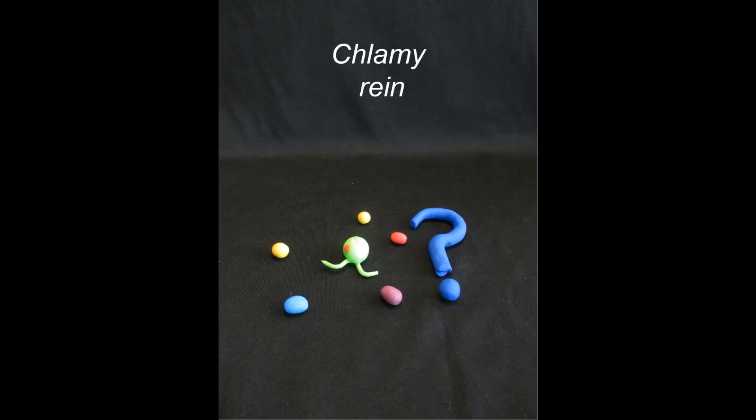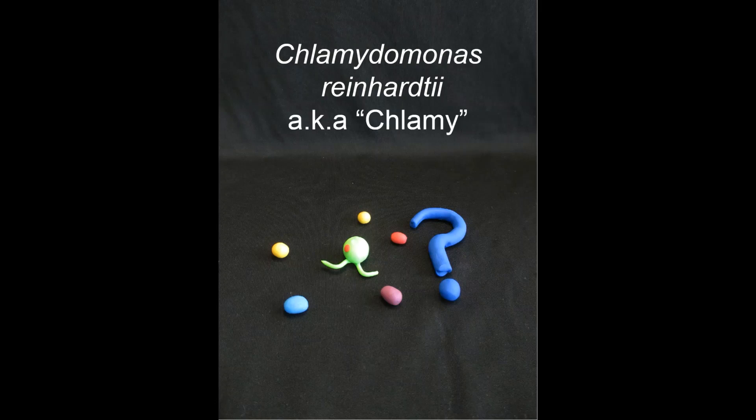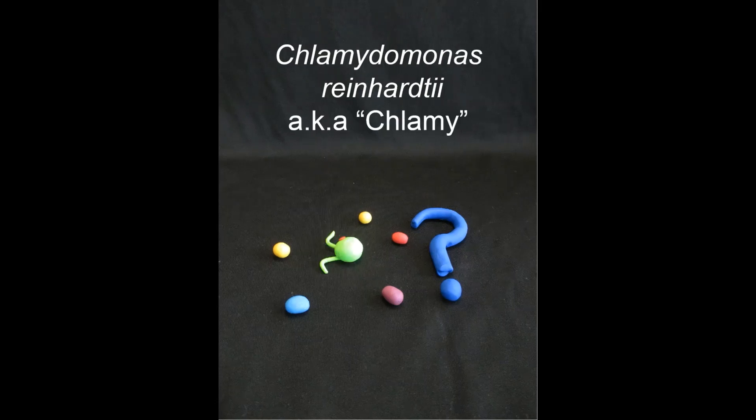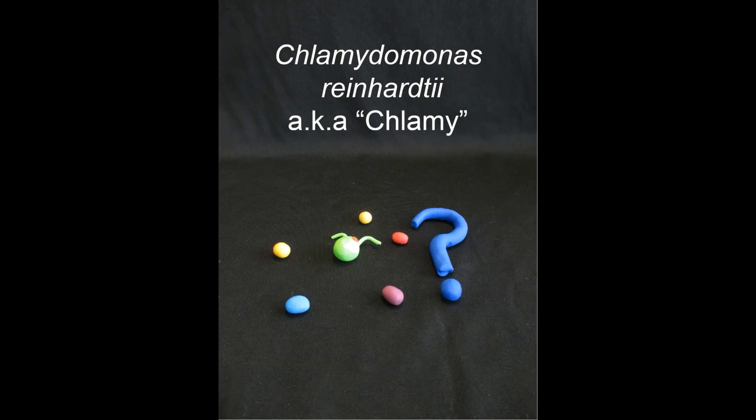Specifically, we are using Chlamydomonas reinhardtii, a soil microalgae, to understand how photosynthetic organisms can interact with soil microbes and use them to survive in nature.